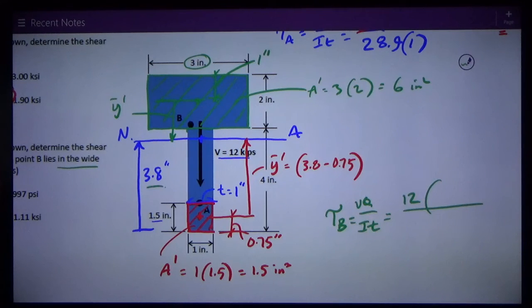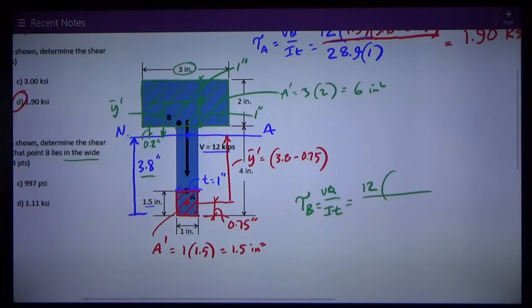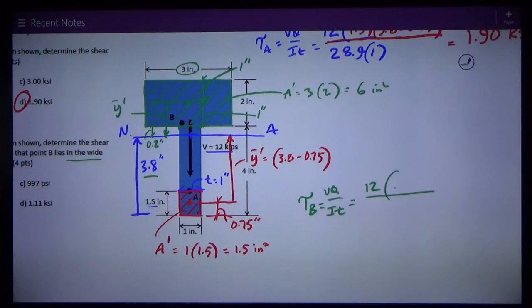From the bottom of the centroid, neutral axis at 3.8, to the bottom of the wide part, it's 4 inches. So that makes this distance 0.2 inches, 4 minus 3.8. And then this is also 1 inch right here. This dimension is 1 inch. So Y bar prime is 1 plus 0.2, is one way of figuring it.